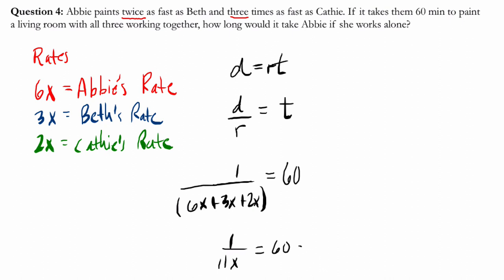Now if we solve for x, I'm going to solve up here, multiply both sides by 11x, and we get 1 equals 660x. So x equals 1 over 660. This is the value we're now working with in our equation, and we can figure out Abby's rate from it.